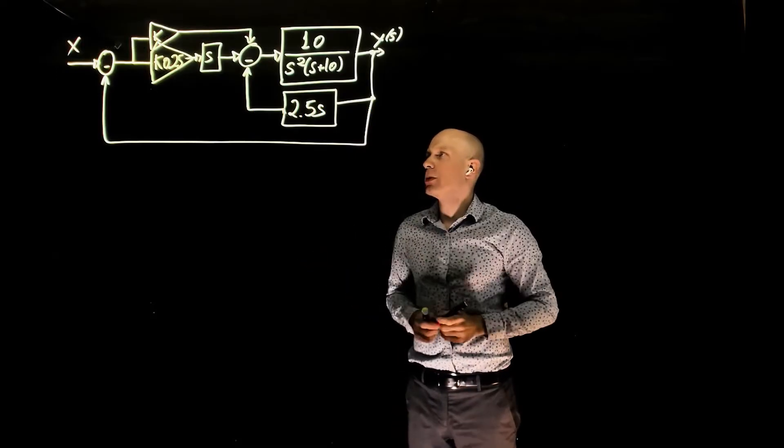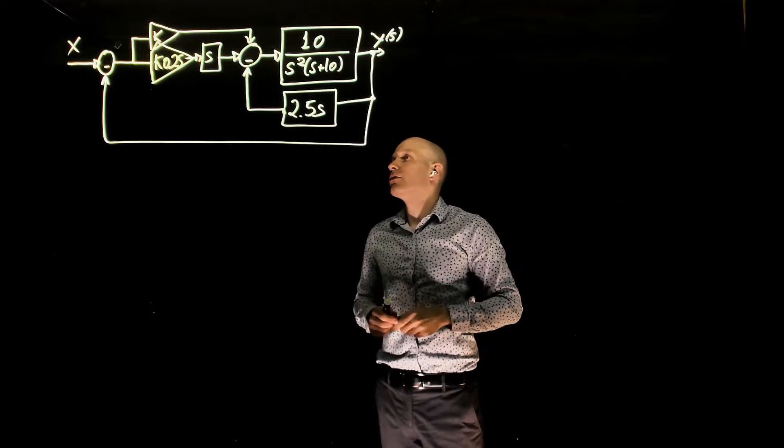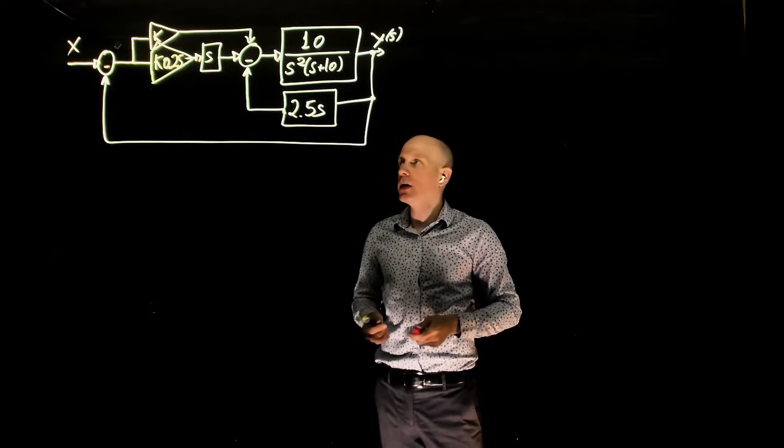In this example, we have a plant controlled by a proportional derivative controller. The proportional and the derivative gains are functions of k, the same value.